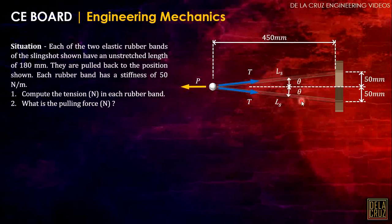As you can see, we have an initially unstretched length, and when stretched, there's elongation. So we can solve the elongation first, then we can compute the tension. Solving for the elongation, take note this angle theta can be solved by arc tan of opposite over adjacent. So we have 6.34 degrees.